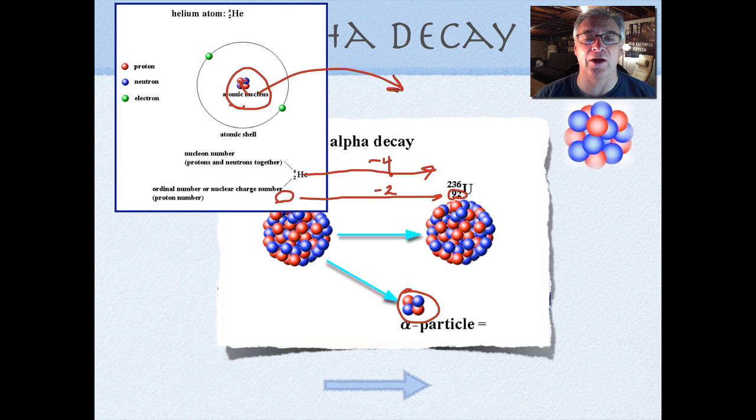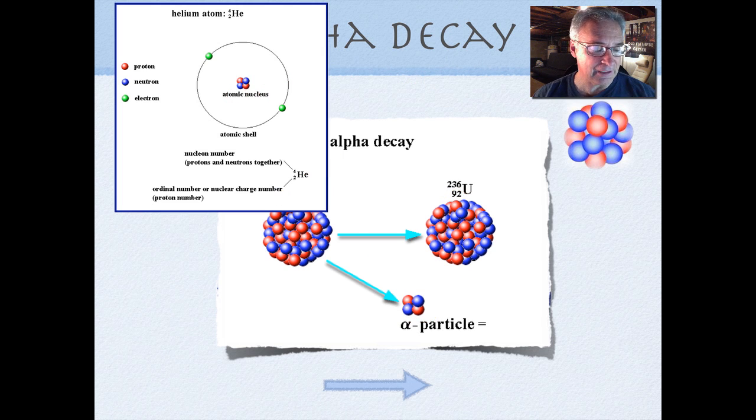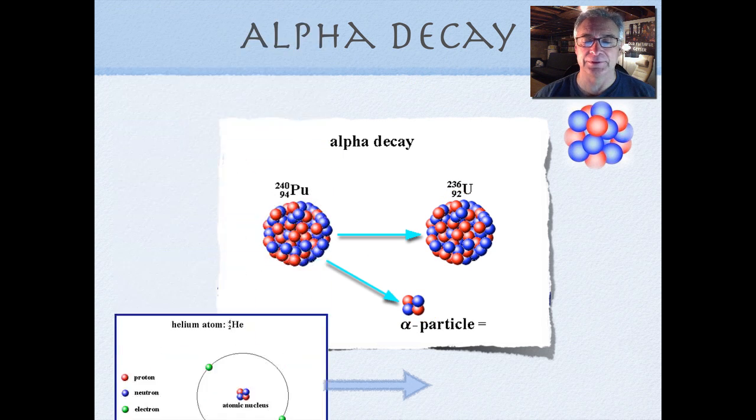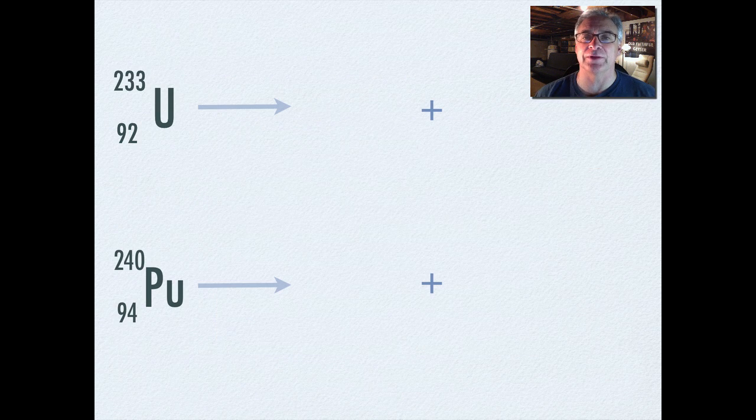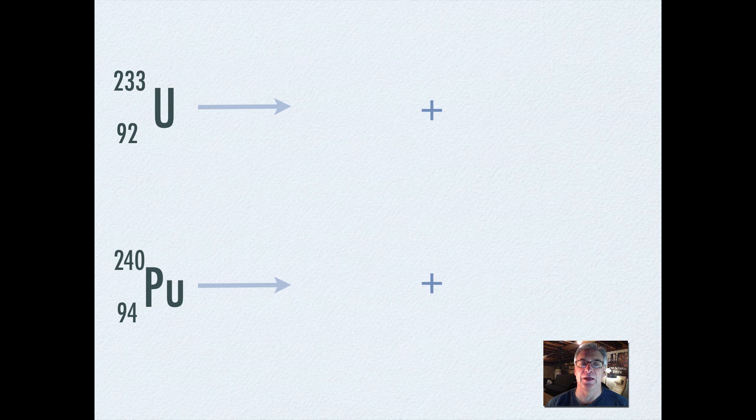That's given off as an alpha particle. And that alpha particle has two protons and an atomic mass of four. It gets rid of that, becomes more stable, a little bit happier. Not totally happier. So if you see a problem like this and you know that alpha particles are going to be given off, you ought to know right from the start that it contains a proton.